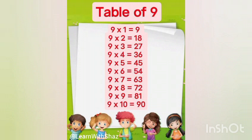9 sixes are 54. 9 sevens are 63. 9 eights are 72. 9 nines are 81. 9 tens are 90.